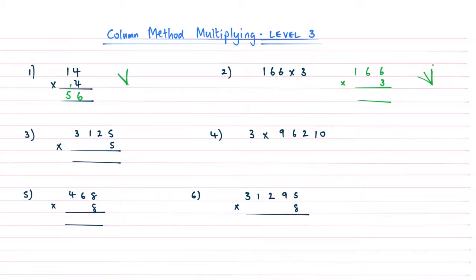So 3 times 6 gives me 18, remembering to carry the 1. So 3 times 6 is another 18, adding that 1 gives me a 19, and then 3 times 1 is 3, add that 1, gives me a 4, so it's 498.